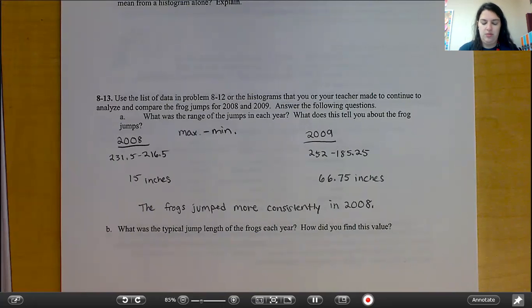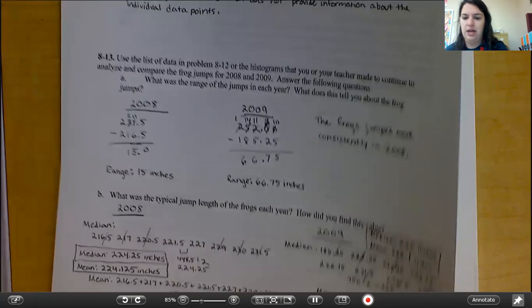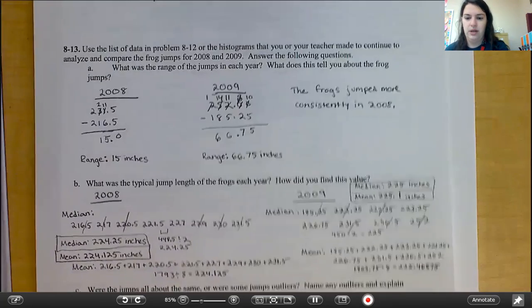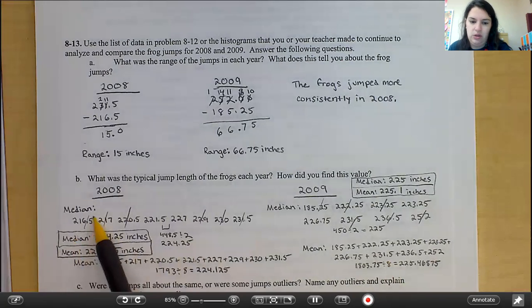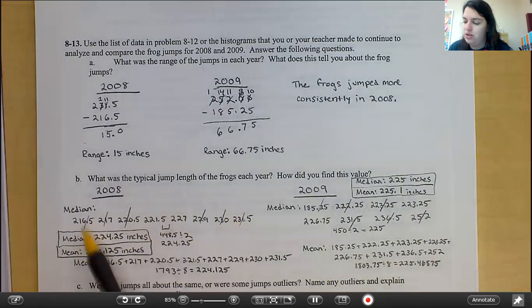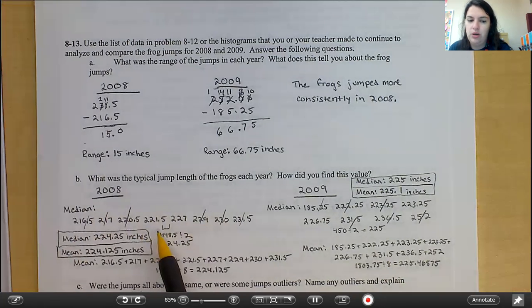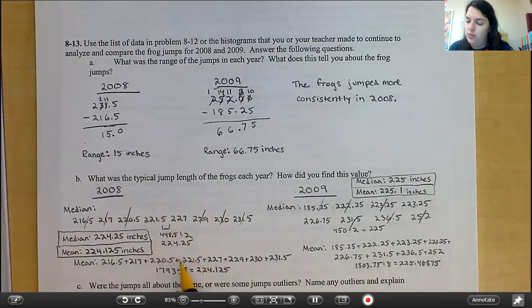Okay, if you're back with me, you've completed the mean and median. I'm actually going to show you mine for this so I don't have to rewrite it all. So, in 2008, for the median, I listed them in order from smallest to largest, and then we crossed out largest, smallest, largest, smallest, largest, all the way. So, we had two left, 221.5 and 227. Add them together, divide by two, we would have got 224.25 as my median.